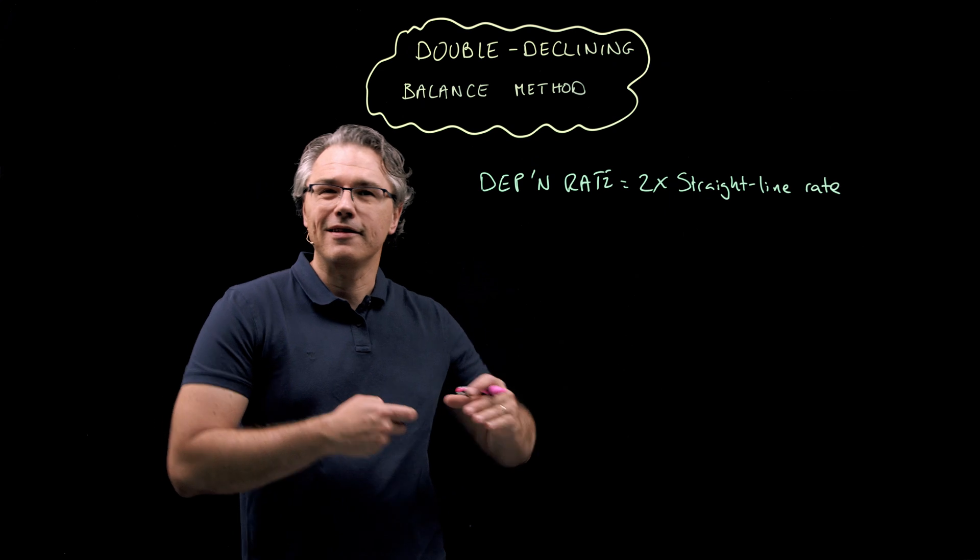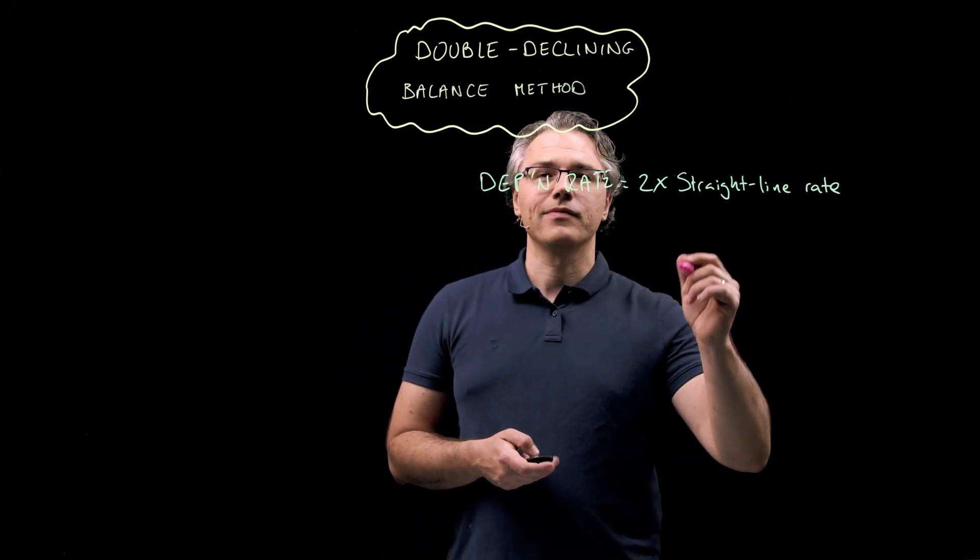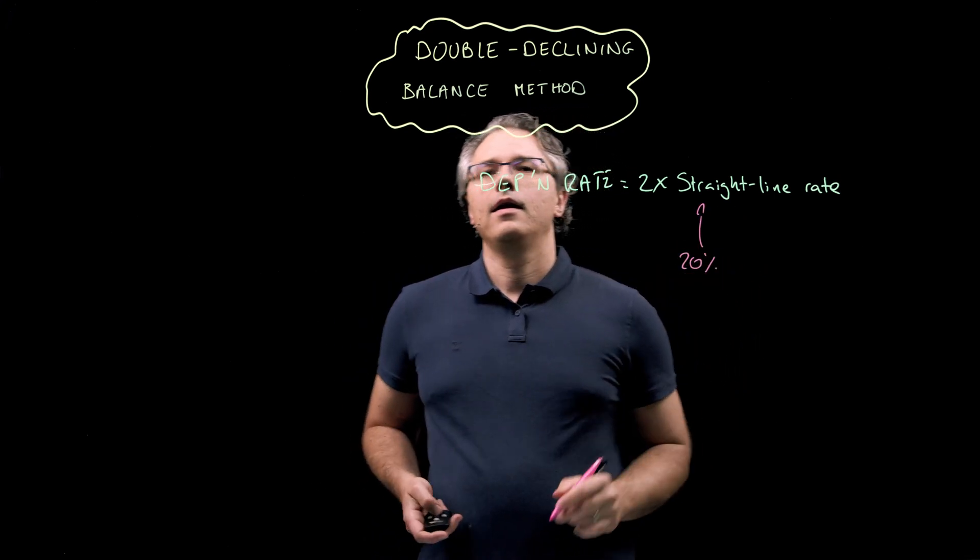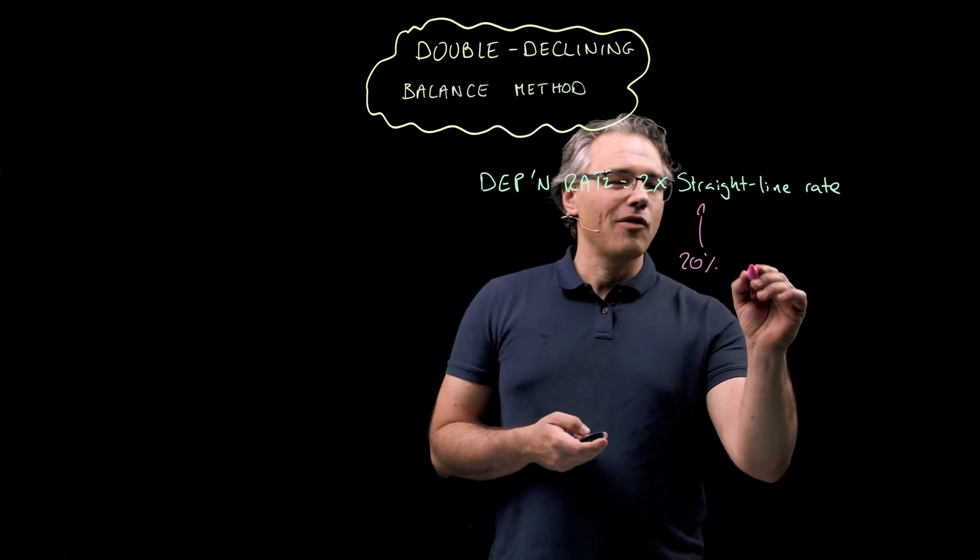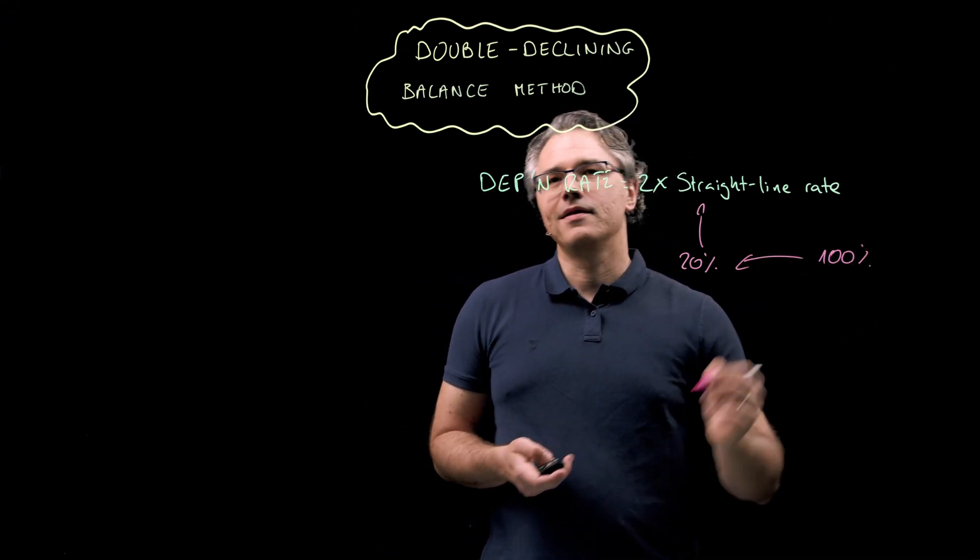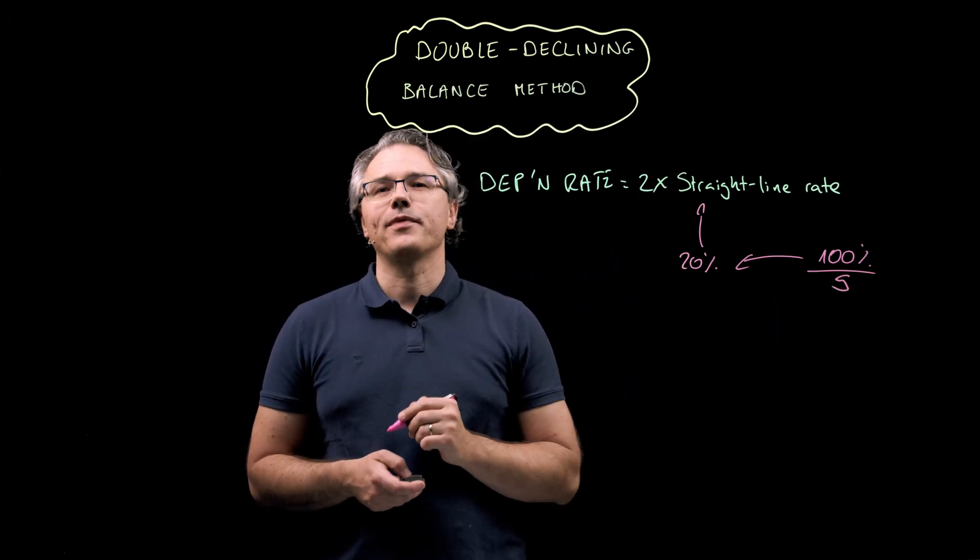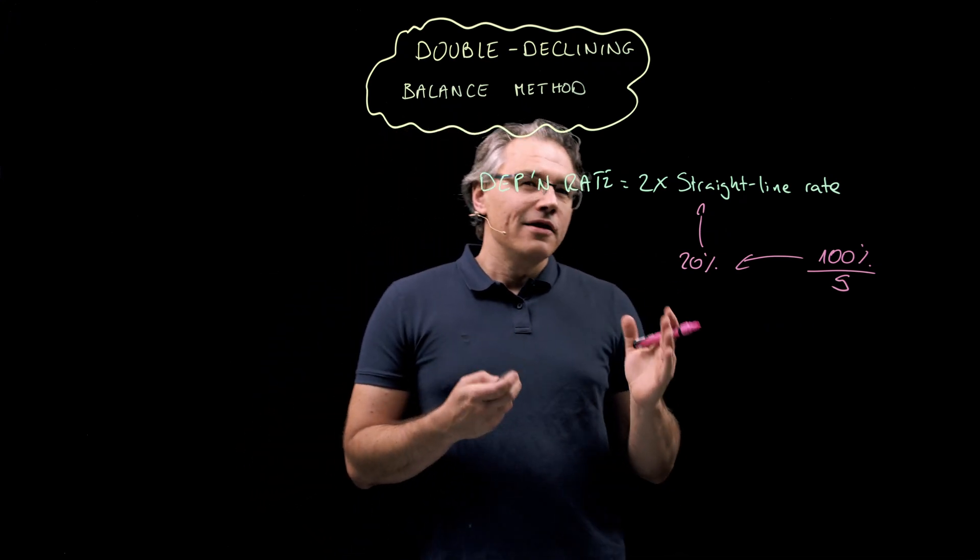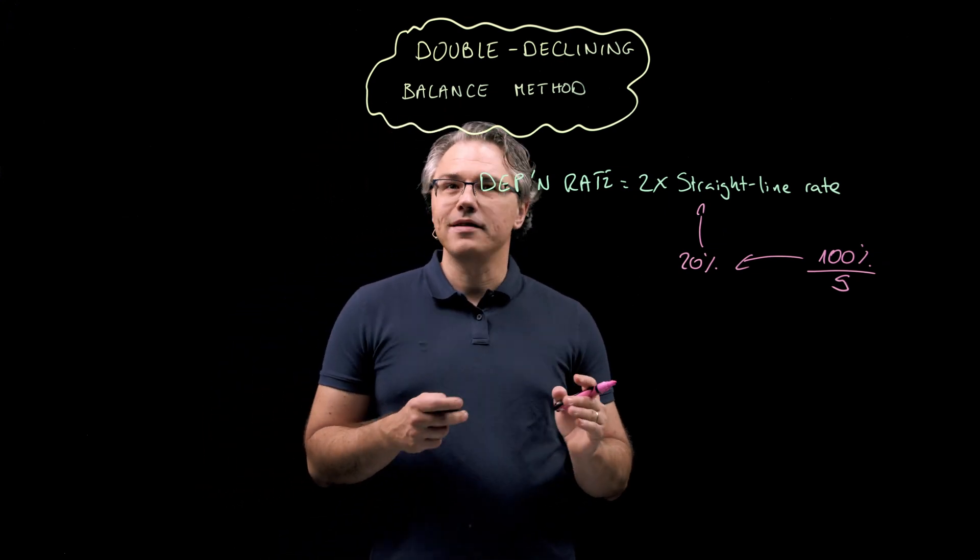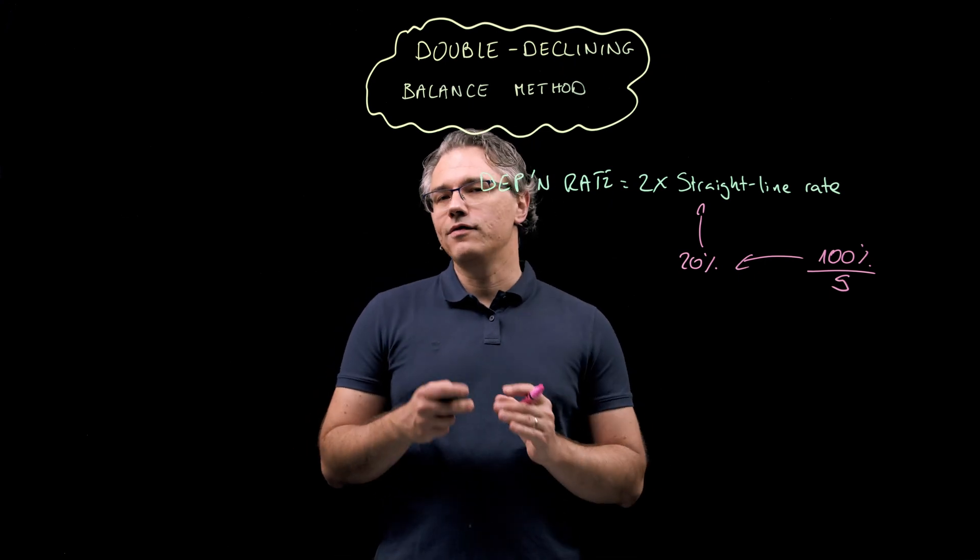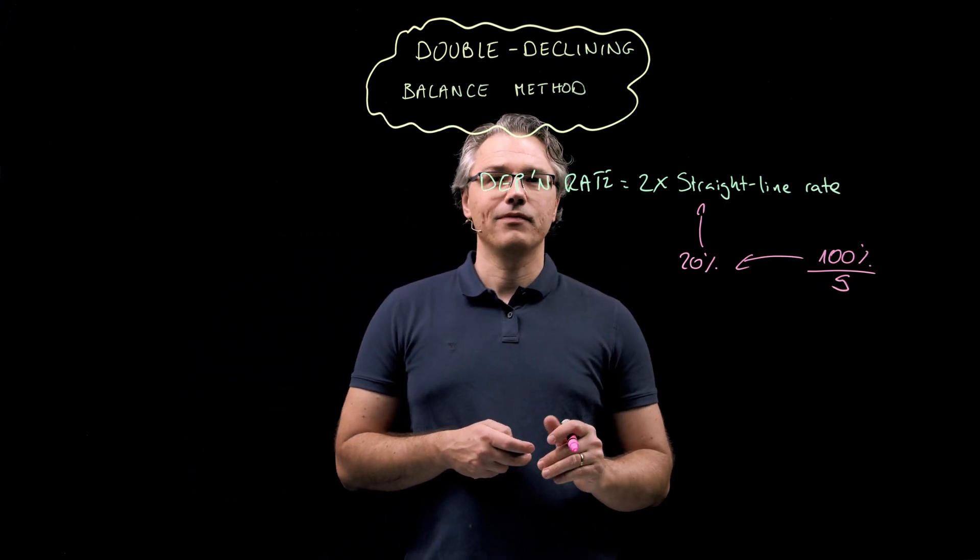If you are thinking in terms of straight line depreciation, five years obviously translates into an annual rate of 20%. Please appreciate that the only thing I've done here is I simply took 100% and divided it by five, the number of years to arrive at this result. We now need to take this 20% and double it, thus arriving at 40%. And this is the rate that we are actually going to apply to the scenario.